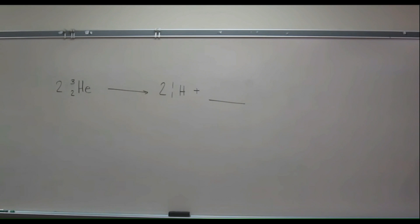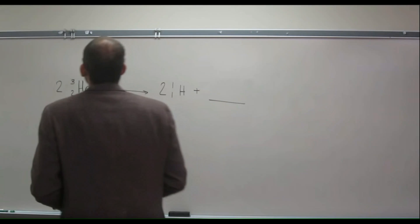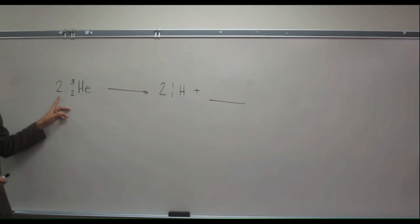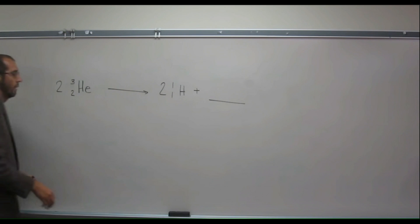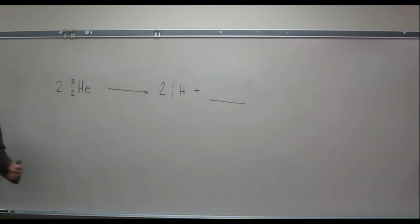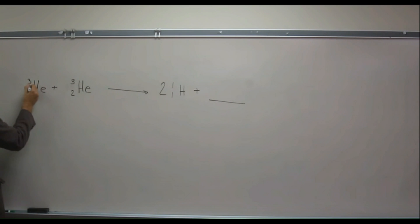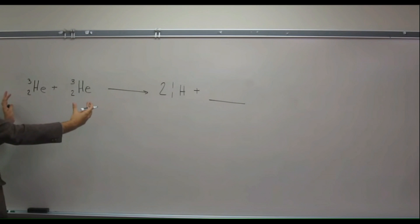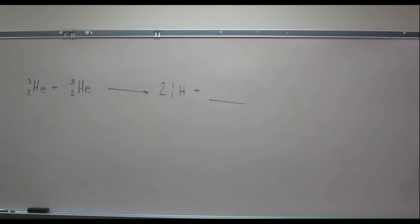So let's do a different type of nuclear reaction. Remember when we have this coefficient in front, we can make two of them. So just to remind ourselves, let's put another one of these helium-3 atoms there. Can anybody tell me — when we have two small nuclei and they get squished together, what type of nuclear reaction is that? Fusion. That's a fusion, yeah, very good.